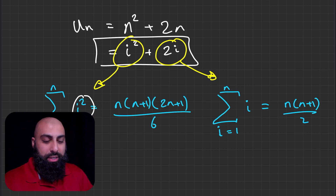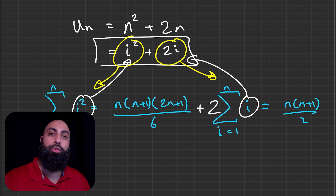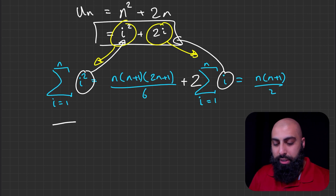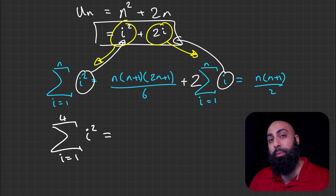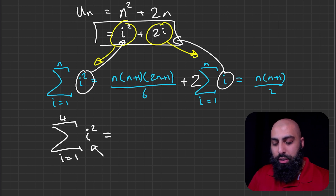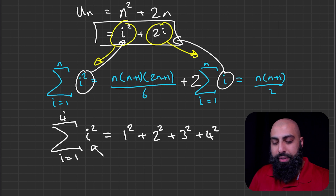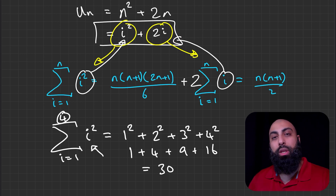Before finding how many cards we need, let's do an example so you understand how each formula works. The sum of i squared from 1 to n, with n equals 4, means we replace i with 1, 2, 3, and 4. So we get 1 squared plus 2 squared plus 3 squared plus 4 squared, which is 1 plus 4 plus 9 plus 16, equal to 30. We should be able to use the summation formula to get the same value of 30.